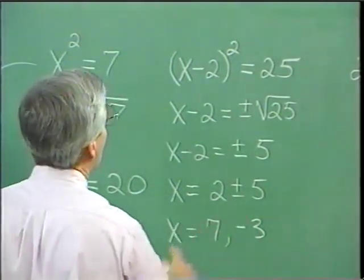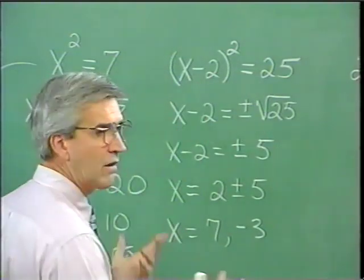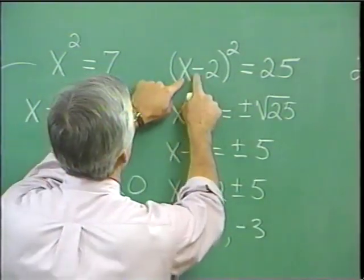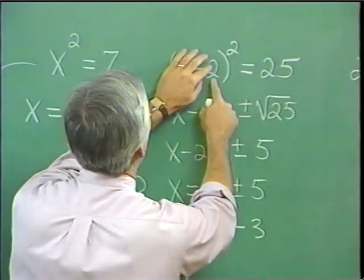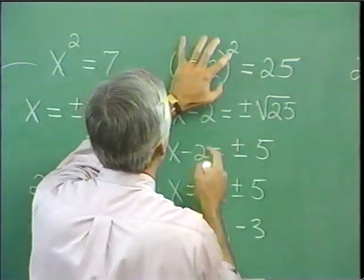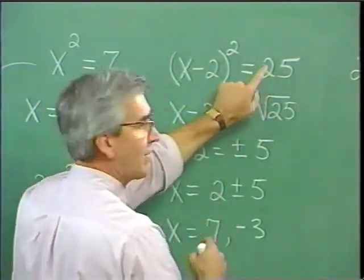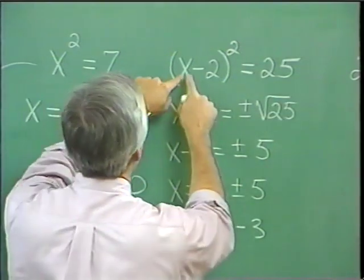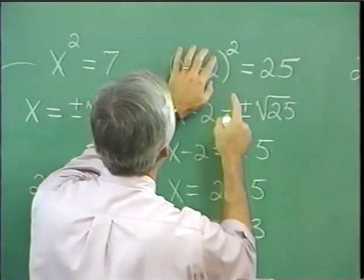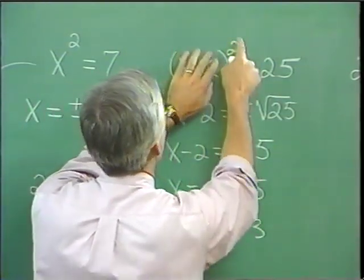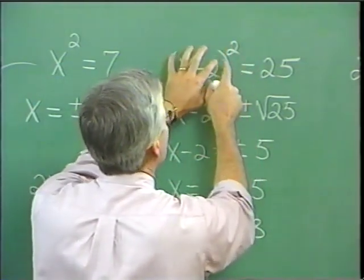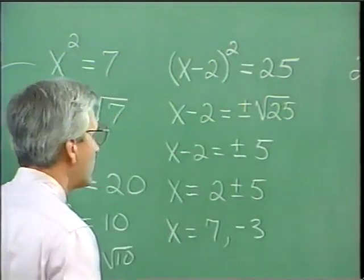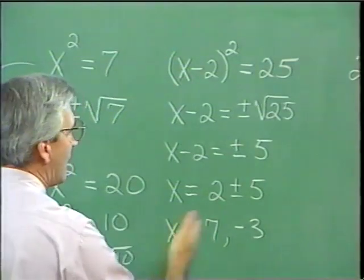Let's verify these solutions. If x is 7, we have 7 minus 2, that's 5, and 5 squared is 25 — 25 equals 25, truth. If x is negative 3, we have negative 3 minus 2, that's negative 5 squared, which is also 25 — 25 equals 25, truth. So these are valid solutions.